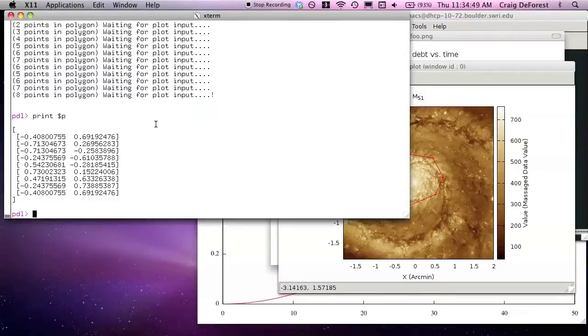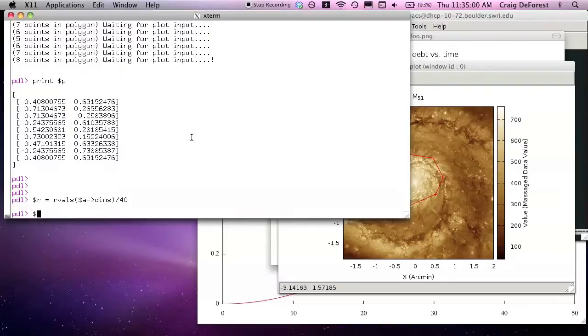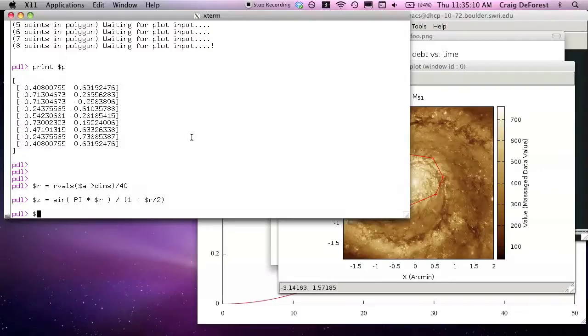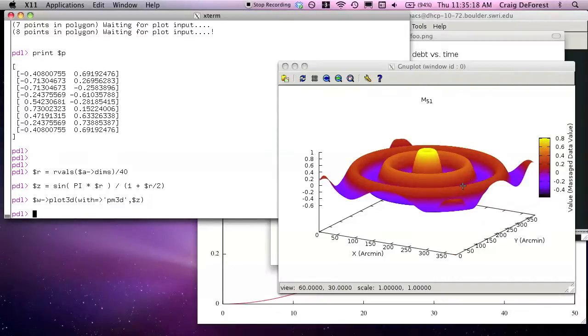So let's make an interesting 3D shape. How about sin of pi times, there's the PDL constants. How about that? And let's plot that. And there's our shape.